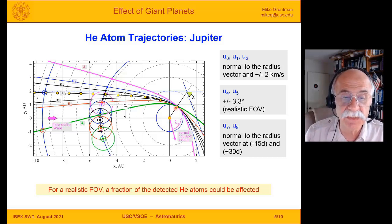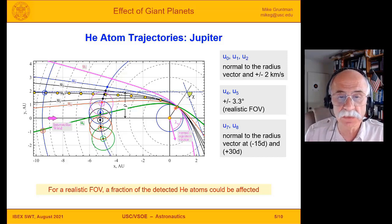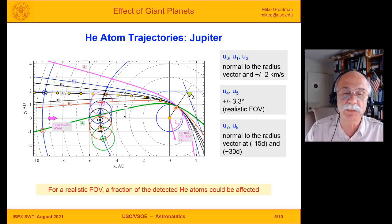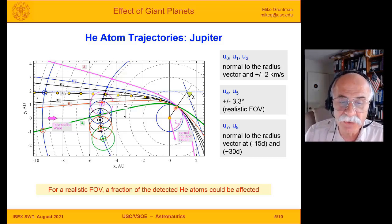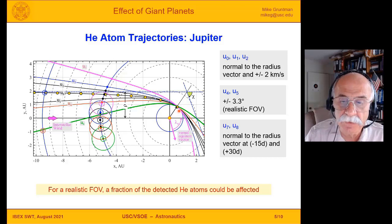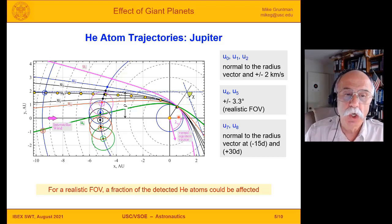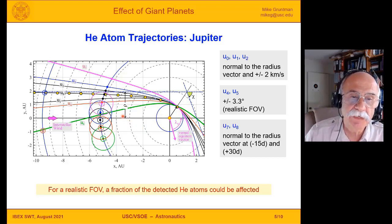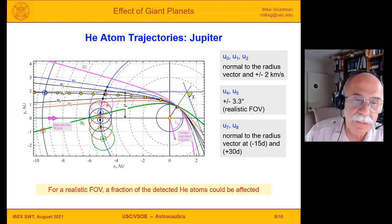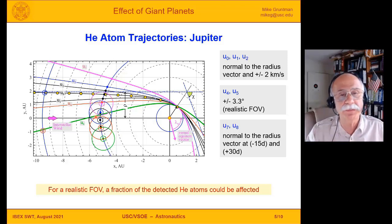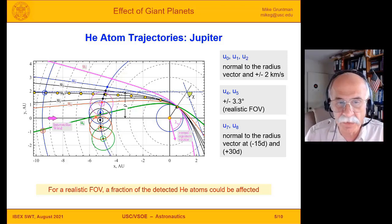For a realistic field of view of sensors — and because sensors also do not discriminate with respect to the velocity of helium atoms being detected — a fraction of detected helium atoms during the season could be affected by the gravitational field if Jupiter is somewhere in this region. A similar analysis applies for Saturn.